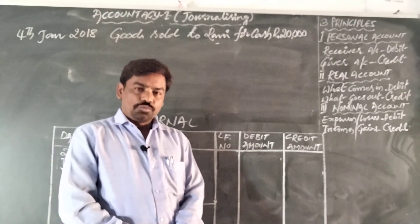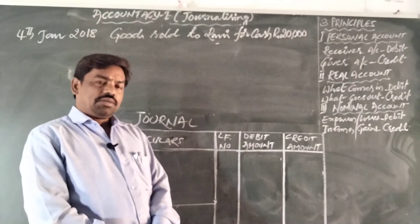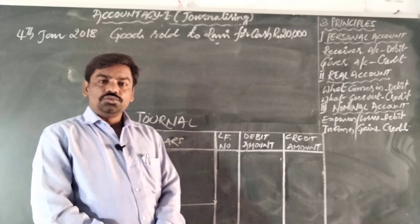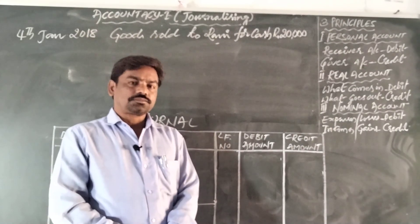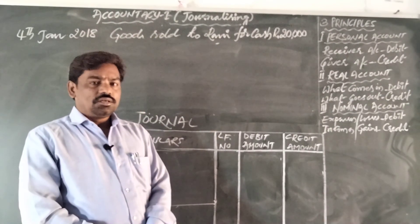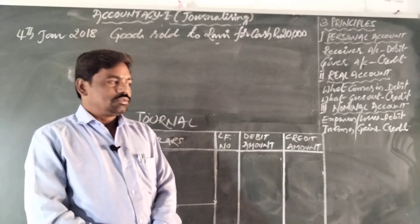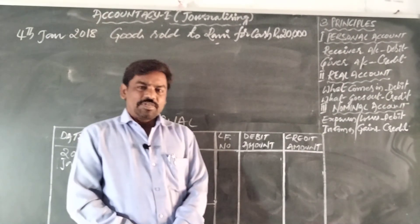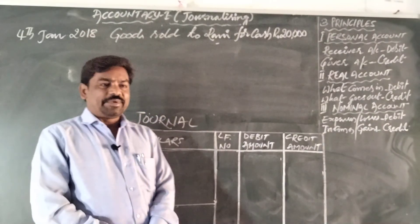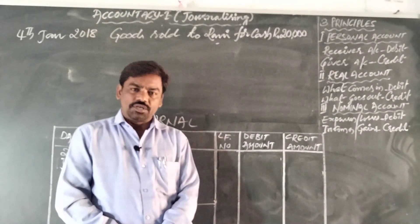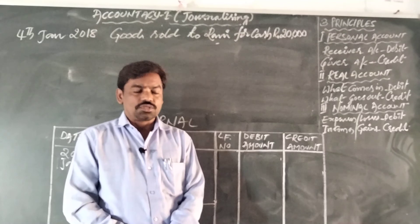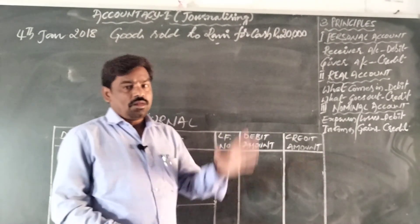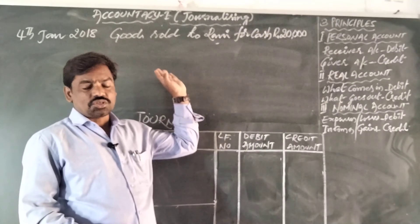Personal account principle: receiver account should be debited, giver account should be credited. Real account principle: debit what comes in, credit what goes out. Nominal account principle: expenses, losses, and costs should be debited; incomes, revenues, and profit should be credited. These are the three accounts and their principles, useful for analyzing business transactions.